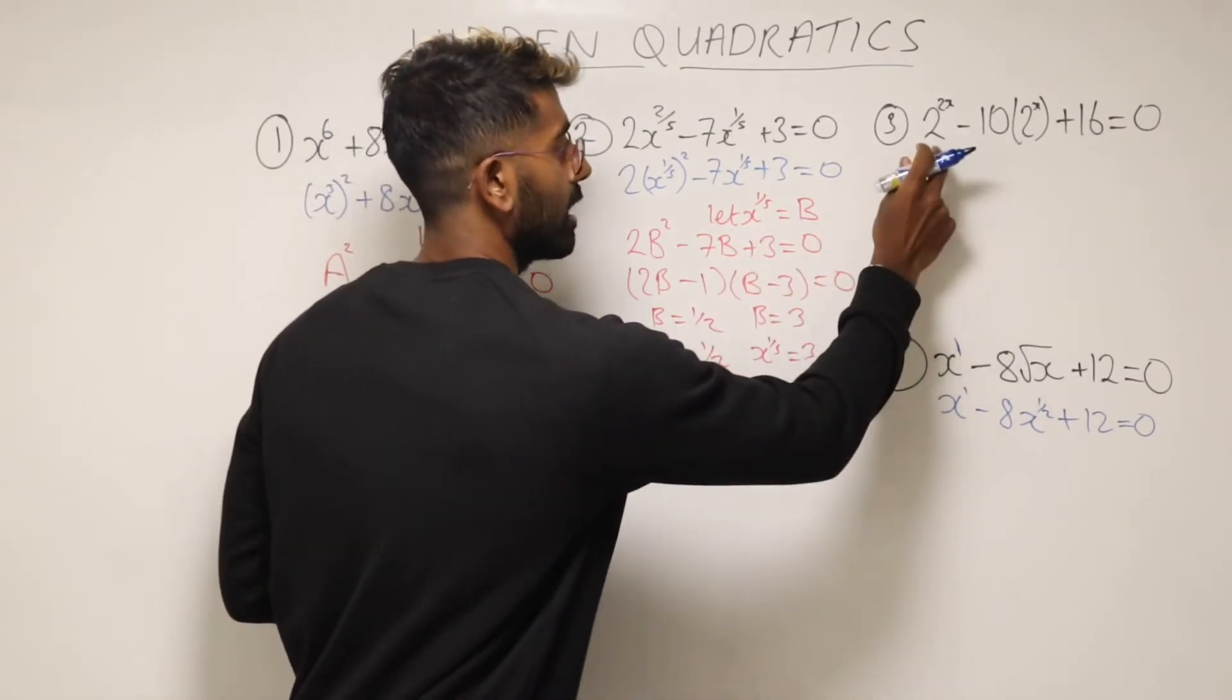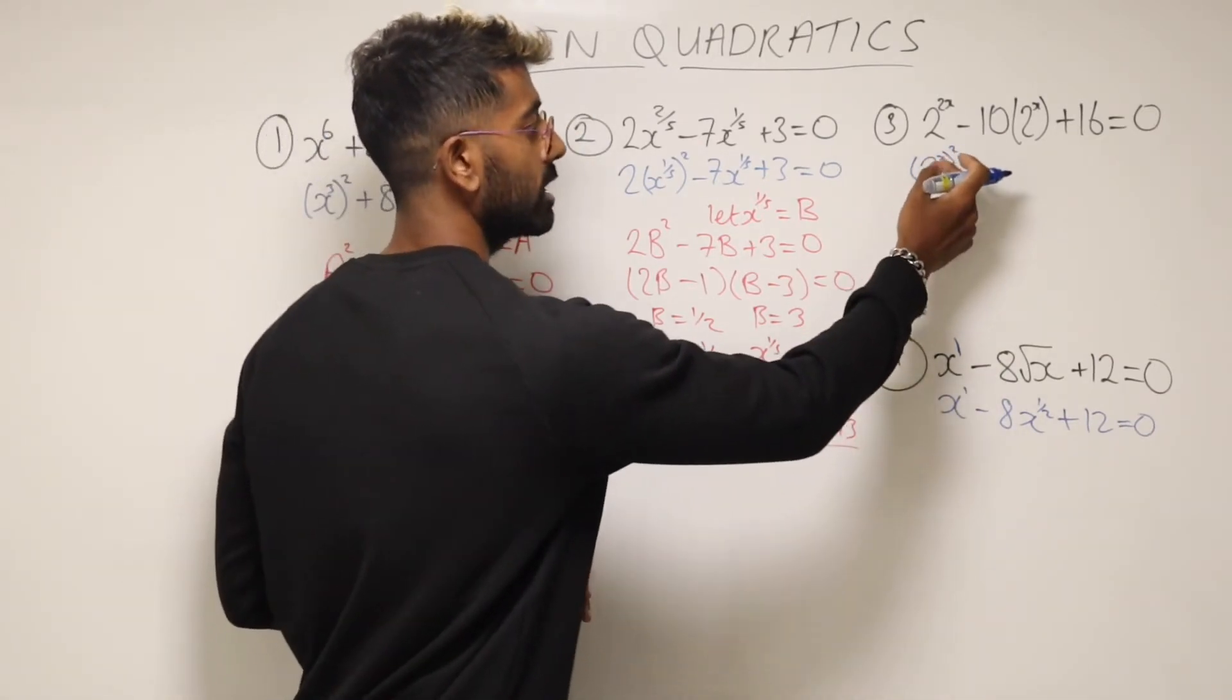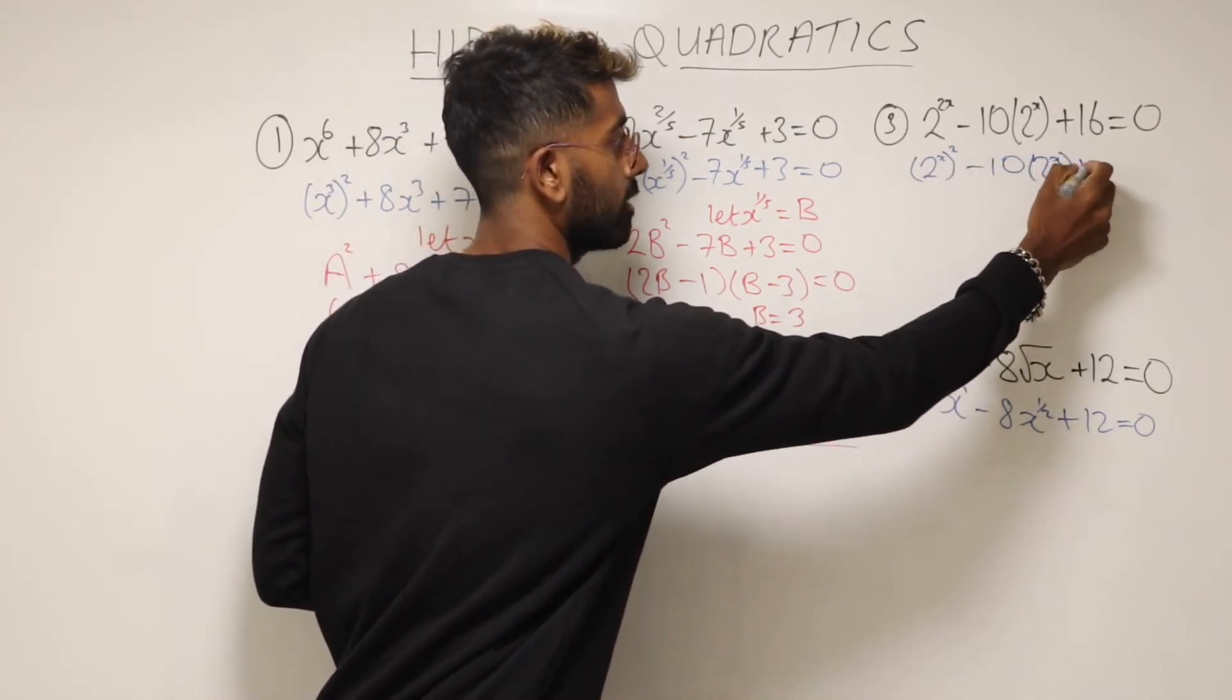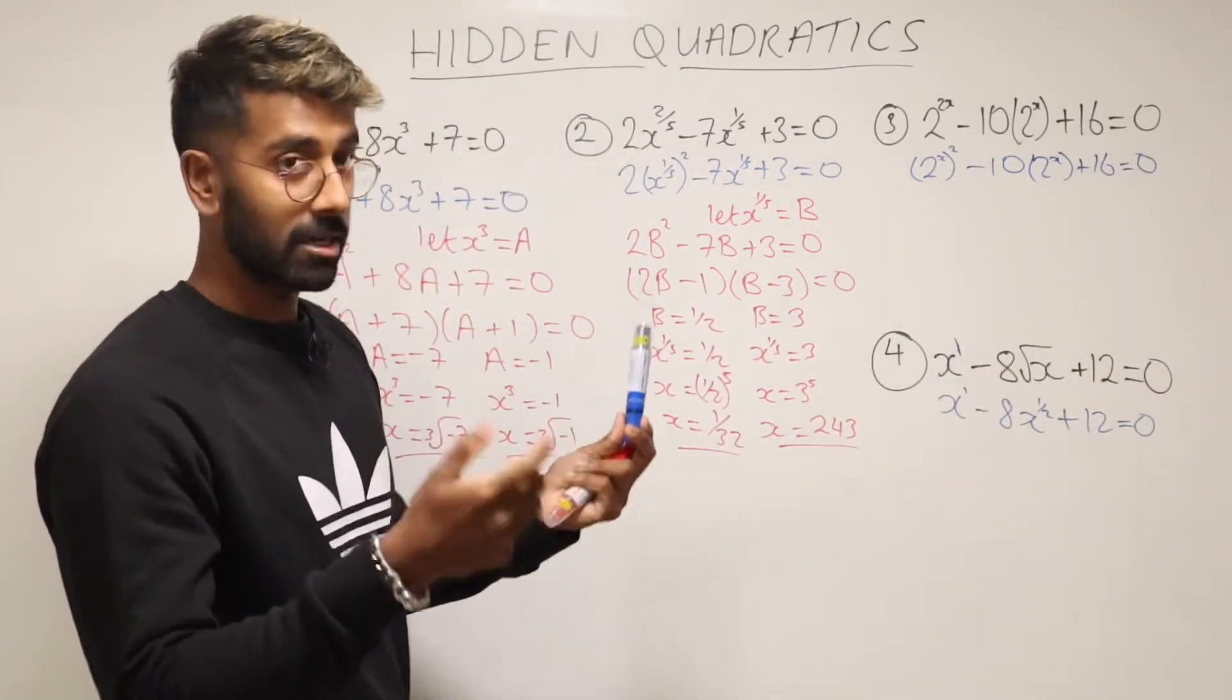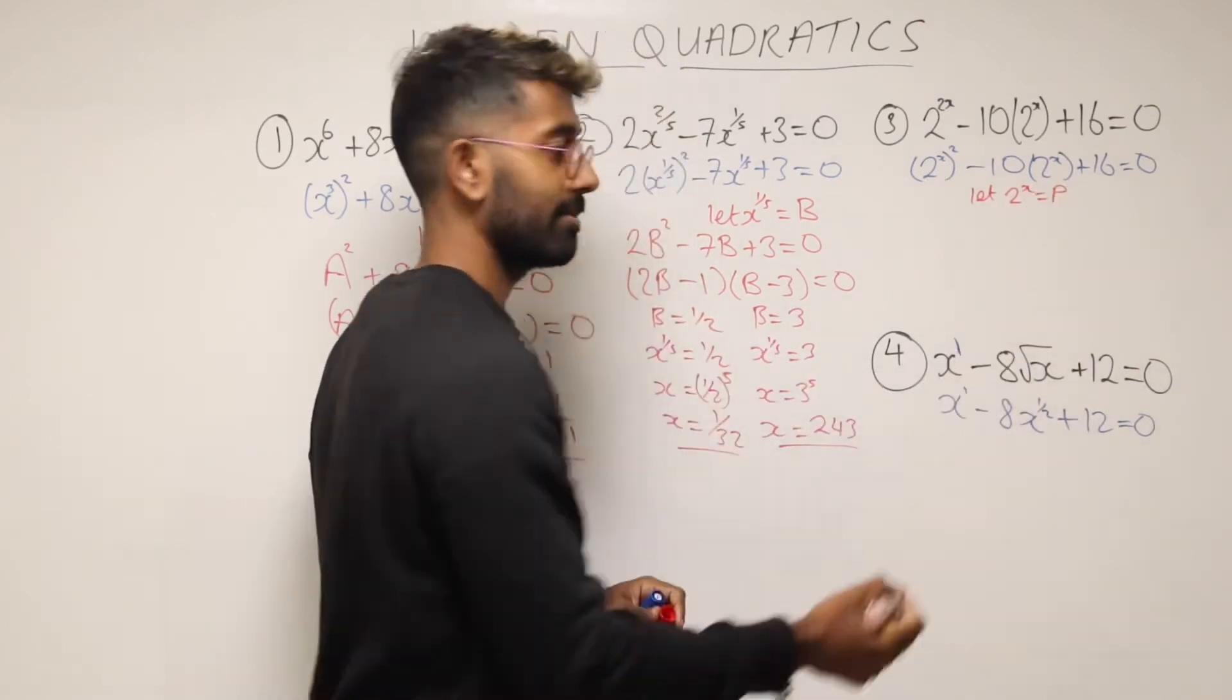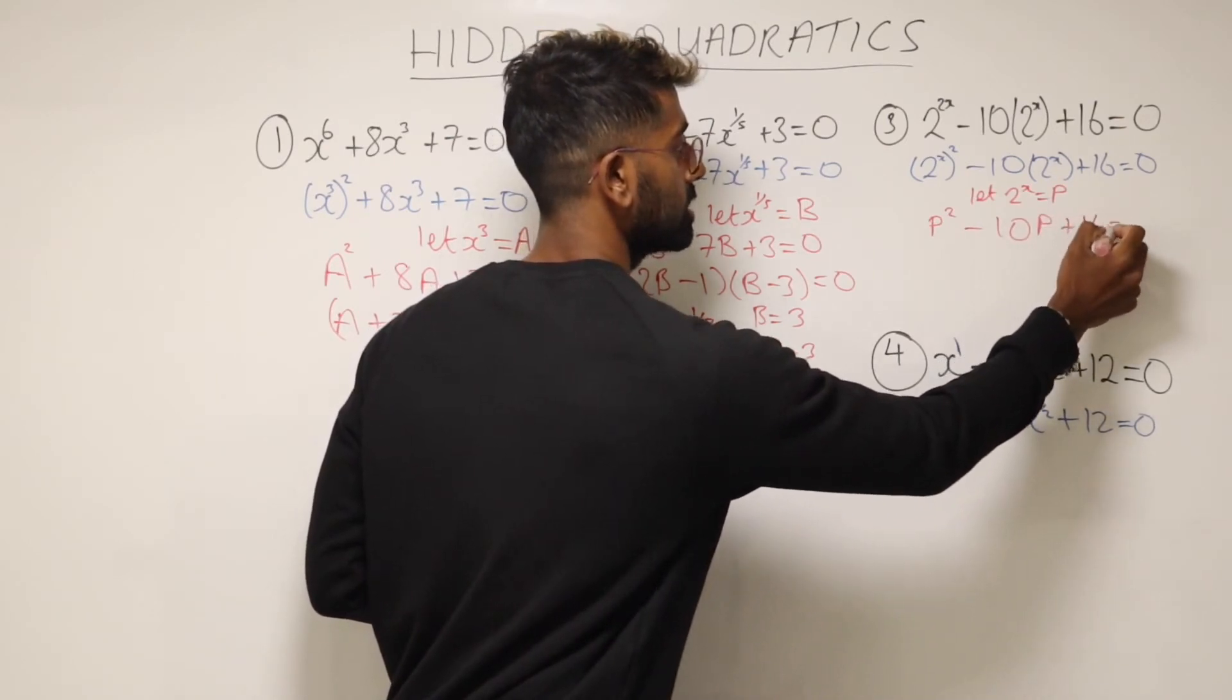So same thing, we need to start by rewriting this. We can write it as 2 to the x and then squared. Because remember if you're multiplying those, x times 2 is 2x, so it's the same thing. And then we can write the rest in exactly the same. Okay, what should we do now? We need to pick another letter. So we'll say let 2 to the x equal, I'm going to go with capital P this time.